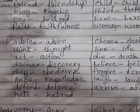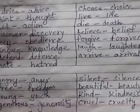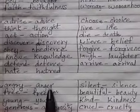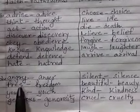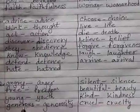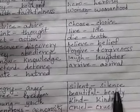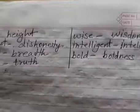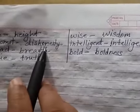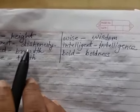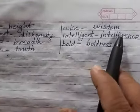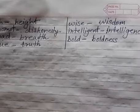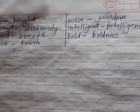Now for adjectives: angry → anger, free → freedom, young → youth, generous → generosity, silent → silence, beautiful → beauty, kind → kindness, cruel → cruelty, high → height, dishonest → dishonesty, broad → breadth, true → truth, wise → wisdom, intelligent → intelligence, bold → boldness. These are adjective words converted into abstract nouns.